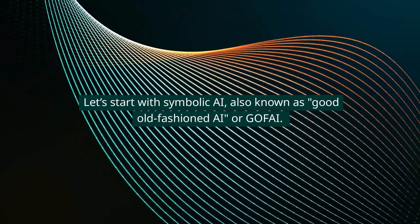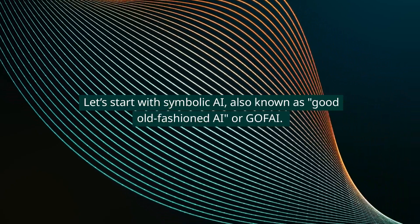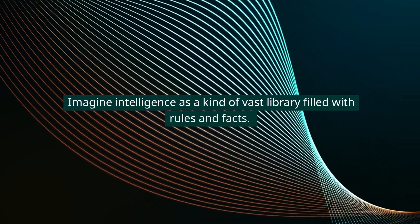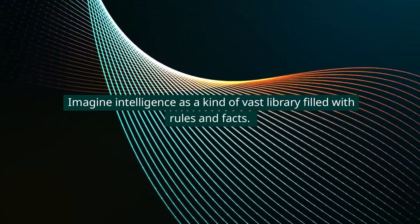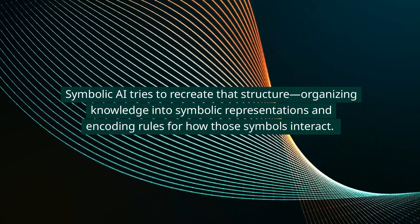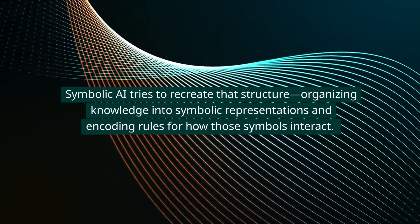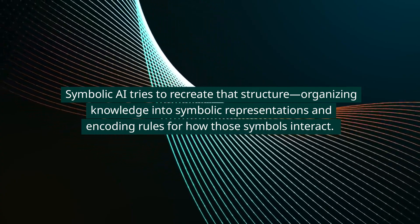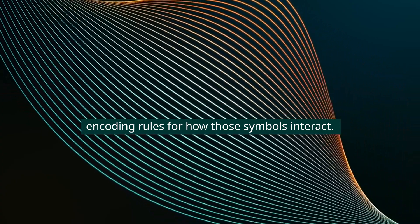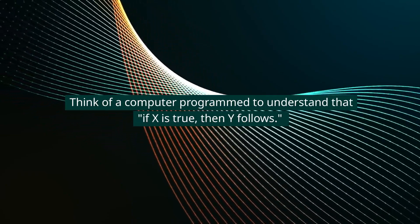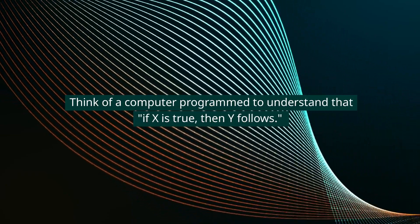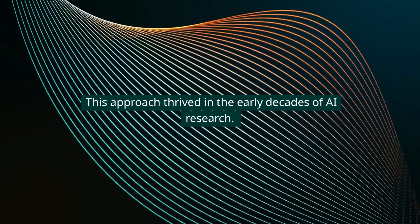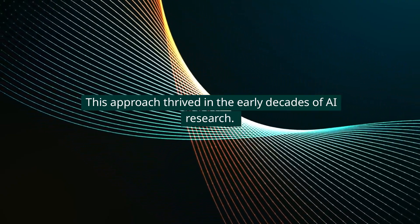Let's start with symbolic AI, also known as good old-fashioned AI, or GOFAI. Imagine intelligence as a kind of vast library filled with rules and facts. Symbolic AI tries to recreate that structure, organizing knowledge into symbolic representations and encoding rules for how those symbols interact. Think of a computer program that understands: if X is true, then Y follows. This approach thrived in the early decades of AI research.